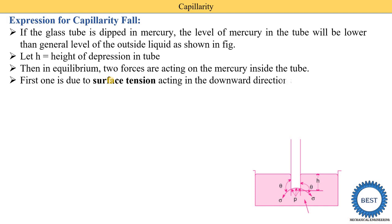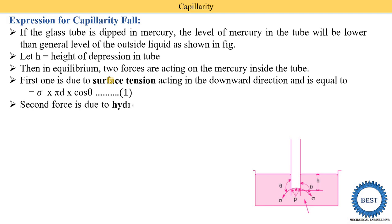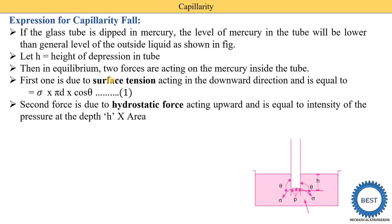Under equilibrium, two forces act on mercury inside the tube. The first is surface tension acting in the downward direction, equal to sigma times pi times d times cos theta. Earlier for capillary rise it acted upward; here it acts downward. The second force is the hydrostatic force acting upward, equal to the intensity of pressure at depth h times the area. Pressure equals rho g h and area equals pi by 4 times d squared.